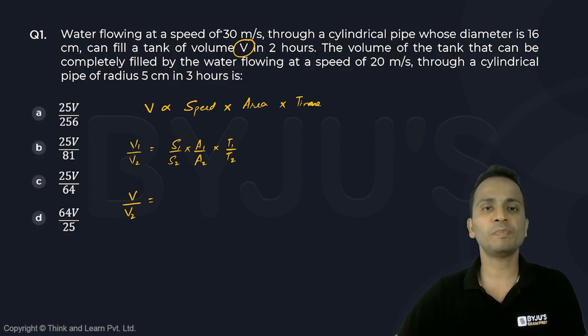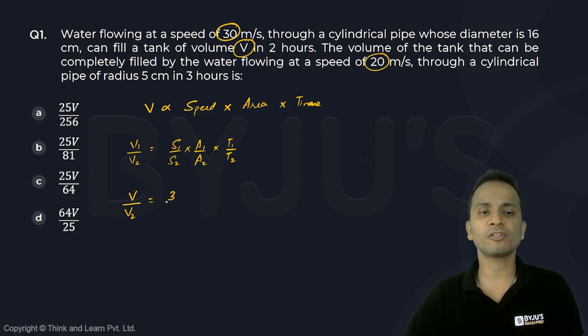S1 upon S2: the first speed is 30, the second speed is 20, so their ratio is 3 upon 2.